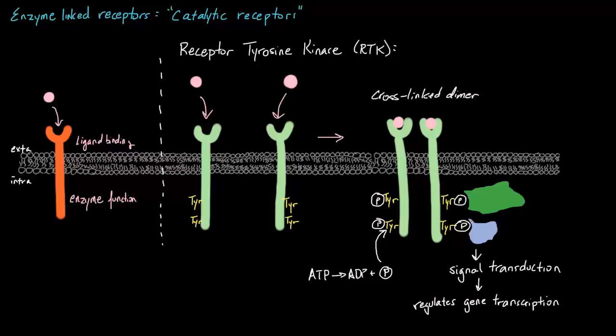In summary, enzyme-linked receptors essentially turn an extracellular chemical signal into enzyme activity inside the cell. Specifically, the most well-known of those are receptor tyrosine kinases — the largest and most well-known group. The binding of a signaling molecule with an RTK activates tyrosine kinase activity in the cytoplasmic section of the receptor. This activity can then launch a series of many different enzymatic reactions, binding different proteins which ultimately undergo complicated signal transduction, generally carrying the signal to the nucleus, which can then alter gene expression.